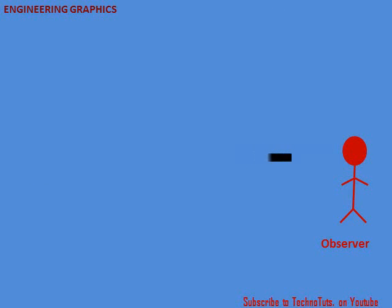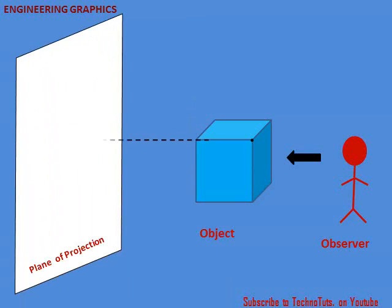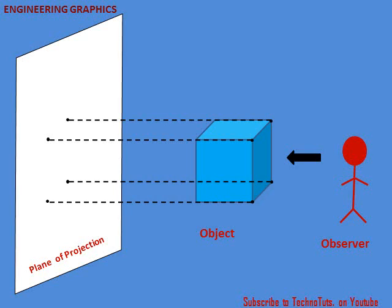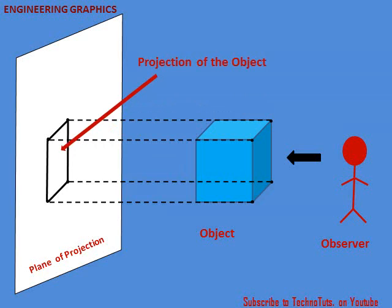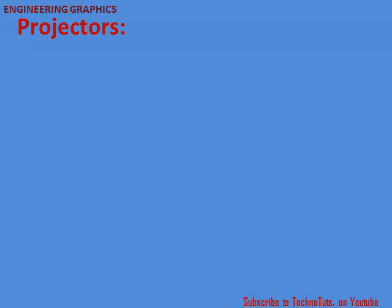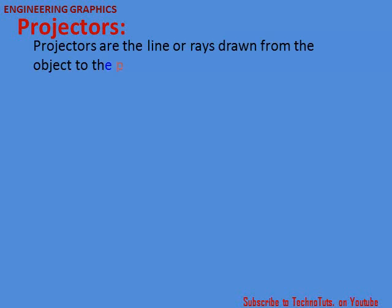The observer watches the object and throws forward the points of the object to the plane of projection with the help of projectors. The same image seen by the observer at the front of the object will be visible on the plane of projection. This projection visible on the plane of projection is called the position of the object, and the lines with which the position is drawn are called projectors. Projectors are the lines or rays drawn from the object to the plane of projection.